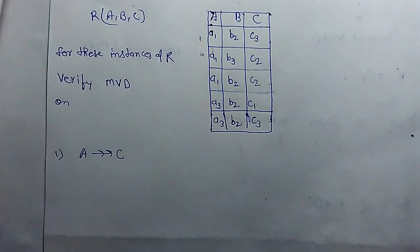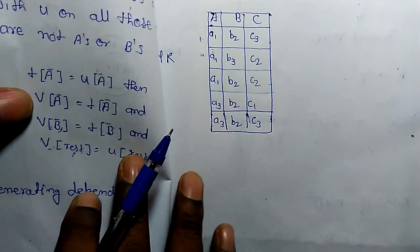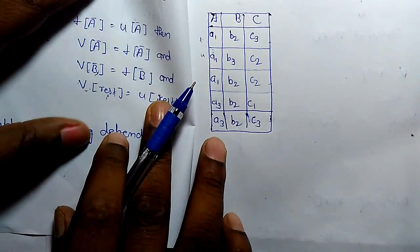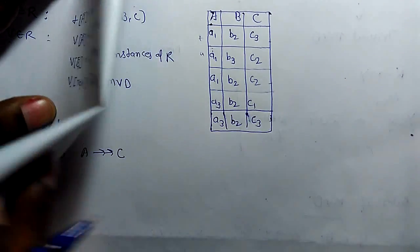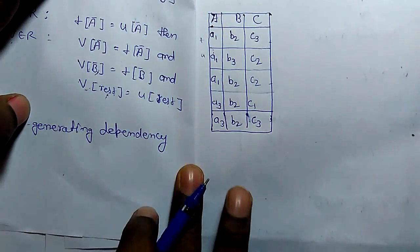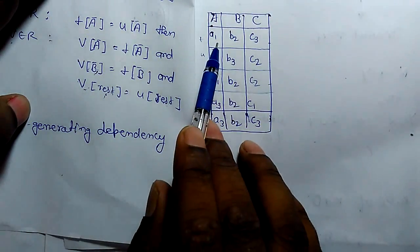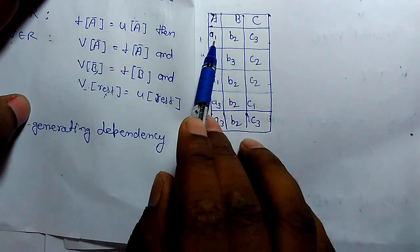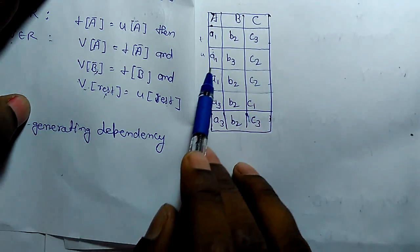If we compare for A multivalued determines C, T is A1, C3 and U is A1, C2.